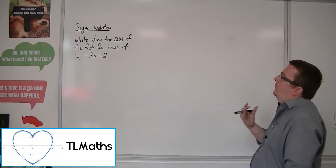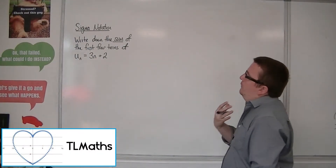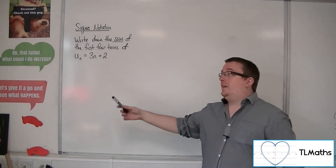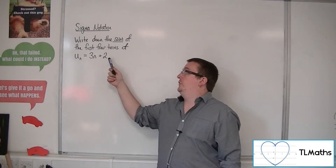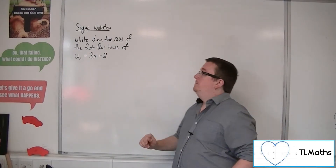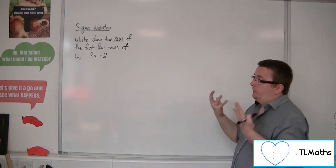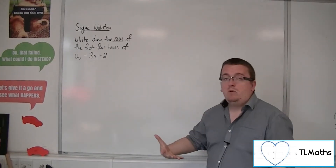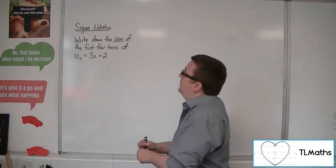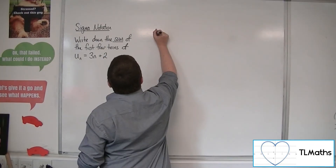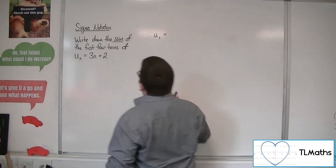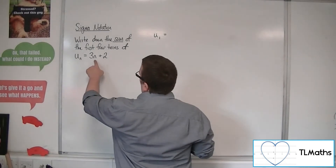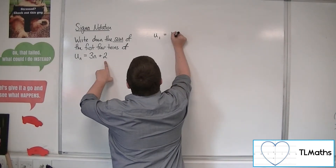Let's say I want to write down the sum of the first four terms of u_n equals 3n plus 2. This is a position-to-term rule, an nth term, so I can easily find the first four terms. The sum means I want to add them all together. So first things first, let's find out what these four terms are. u_1 is when n is 1, so 3 lots of 1 plus 2, so we have 5.